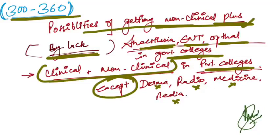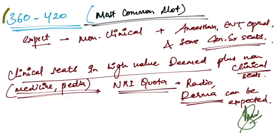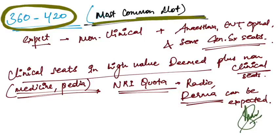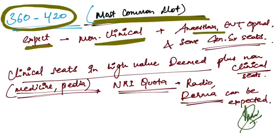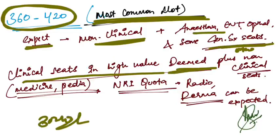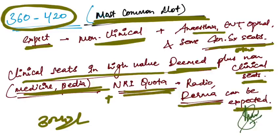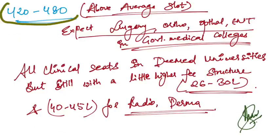If you are ranging around 360 to 420, this is the most common slot I found. You can expect non-clinical seats plus anesthesia, ENT, ophthalmology, and some general surgery and ortho seats at this range. Clinical seats in high value deemed colleges if you can afford fee structure of around 30 to 40 lakhs. Plus non-clinical seats like medicine and pediatrics, plus NRI quota seats like radio and derma you can expect in this range.